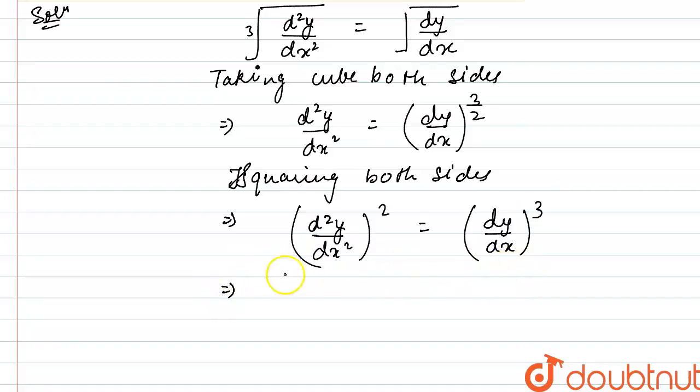Now take this to the left hand side. We will get d2y by dx square whole square minus dy by dx whole cube is equals to 0. I have simplified this differential equation.